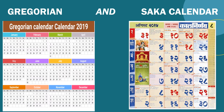The Gregorian calendar is now used all over the world. The Saka calendar is the Indian National calendar, or it is the Hindu calendar.